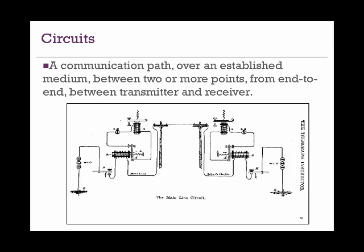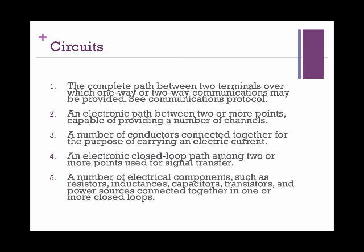Communication networks are actually circuits — sometimes very big circuits. A circuit is a communication path between two or more nodes, just like the one you see in the picture. For a more technical definition, a circuit can be defined as an electronic closed-loop path among two or more points used for signal transfer. In communication protocols, it is the complete path between two terminals over which one-way or two-way communications may be provided. Circuits are the veins of the whole communication web and the core of the many layers that build up any communication device.